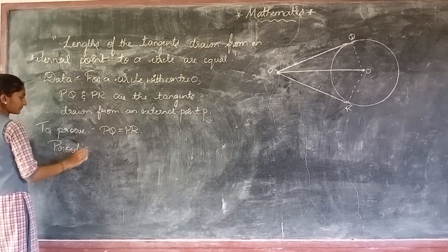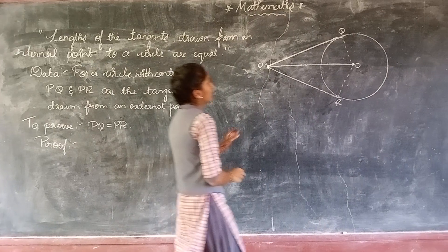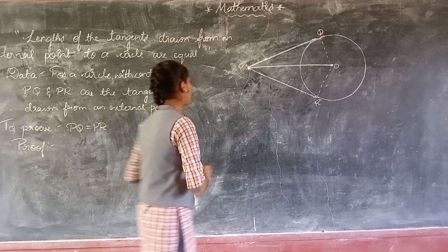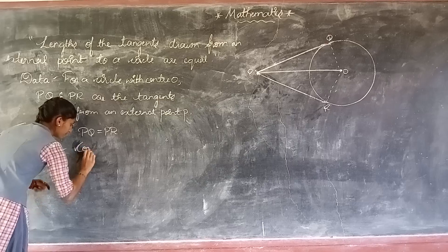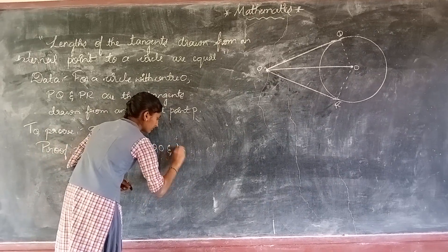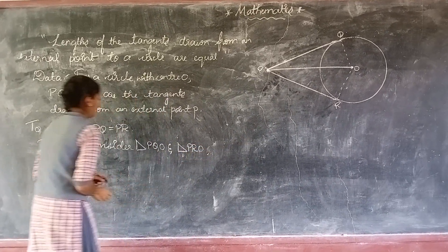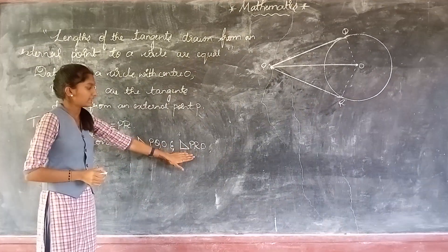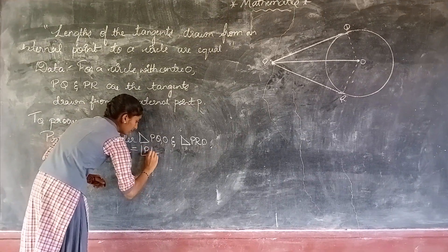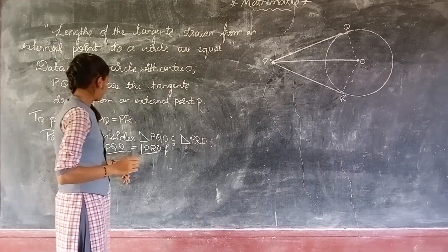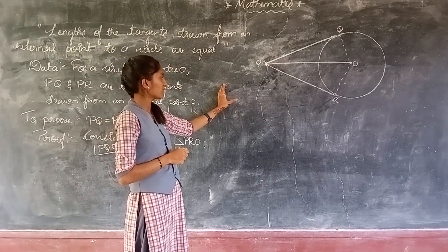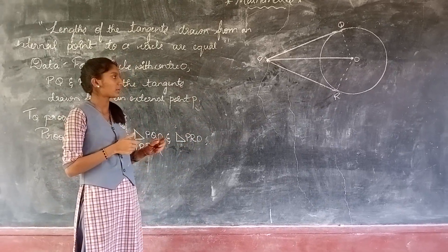First, consider triangle PQO and triangle PRO. Angle PQO is equal to angle PRO — reason: a tangent drawn to a circle is perpendicular to the radius at the point of contact.